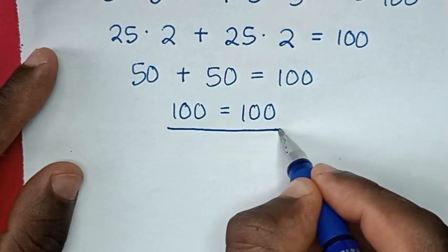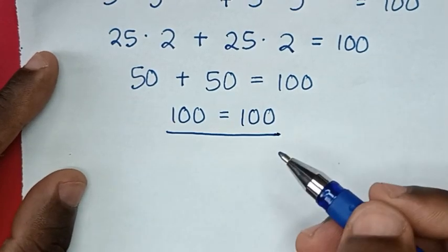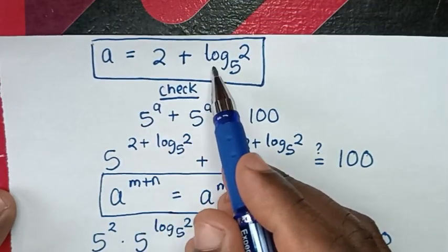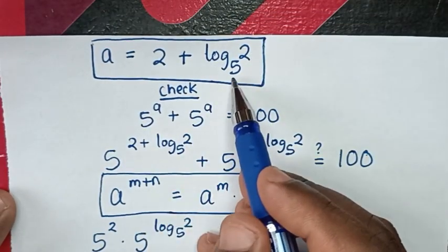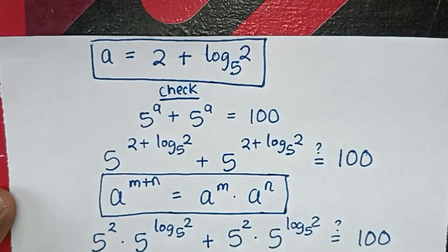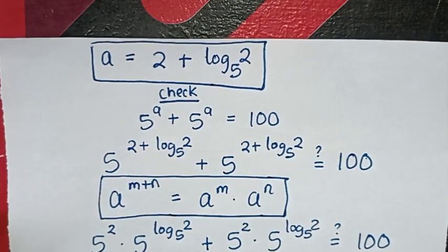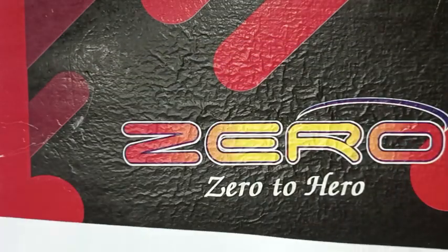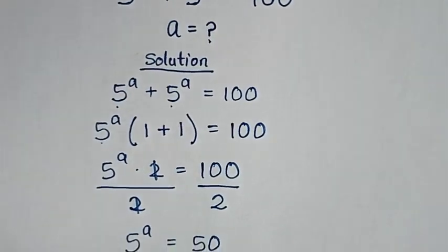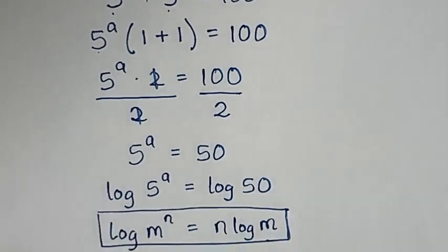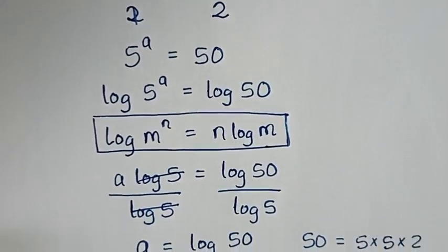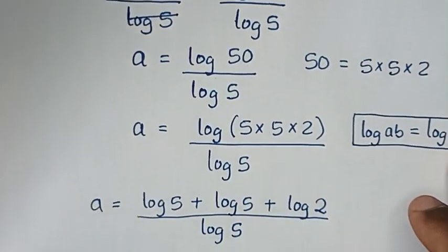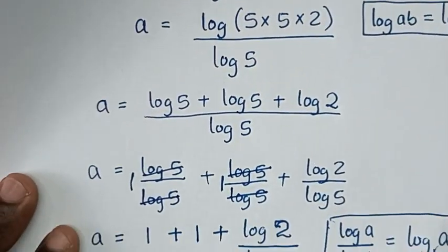So the value of a is 2 plus log base 5 of 2. Thank you. Don't forget to subscribe to my channel, and see you in the next video. Bye bye.